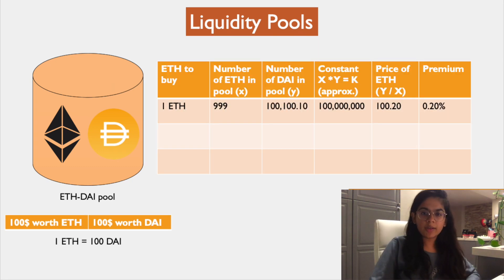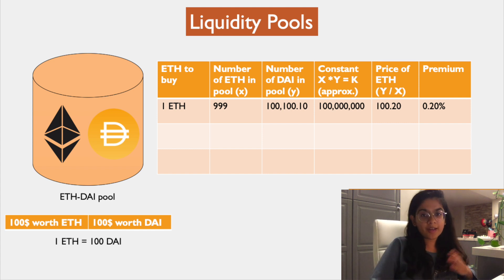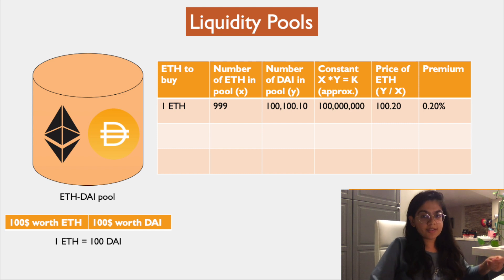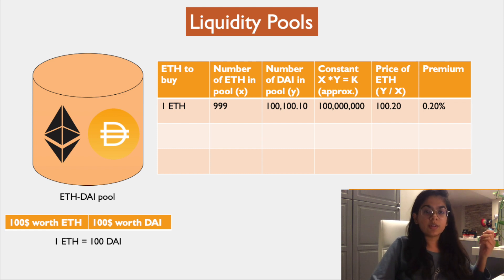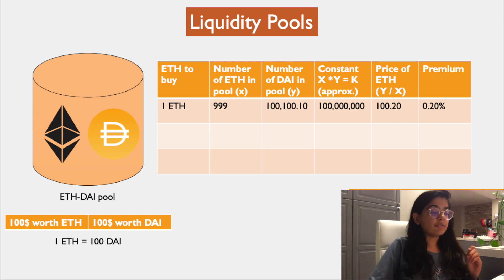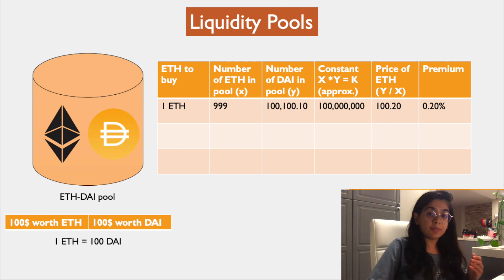Now if a buyer comes along and wants to buy one ETH, the number of ETH in the pool decreases — say from 1000 to 999 — and the number of DAI in the pool increases by a hundred dollars. This is because a constant K must be maintained: the number of ETH multiplied by the number of DAI should equal K. The price of ETH is then determined by the number of DAI in the pool divided by the number of ETH.